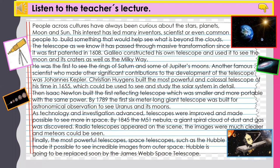The telescope as we know it has passed through massive transformation since it was first patented in 1608. Galileo constructed his own telescope and used it to see the moon and its craters, as well as the Milky Way. He was the first to see the rings of Saturn and some of Jupiter's moons. Another famous scientist who made significant contributions to the development of the telescope was Johannes Kepler.